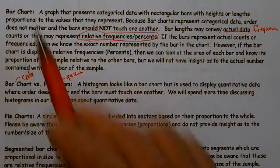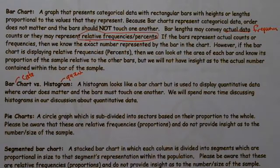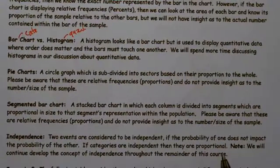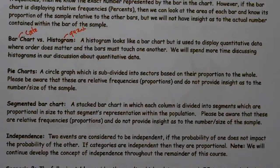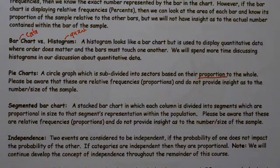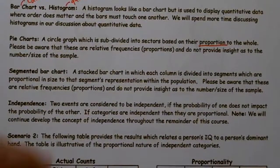For categorical data there's no order — because what comes first, blue or red? — whereas with quantitative data, measurement does have an order to it. Another type of chart is the pie chart, which is subdivided into sectors based on their proportion, so we're giving actual percents — these are the relative frequencies. The next one is a segmented bar chart, which is a stacked bar chart, and it goes to 100%, because all the subgroups that make up a bar will add up to 100%.